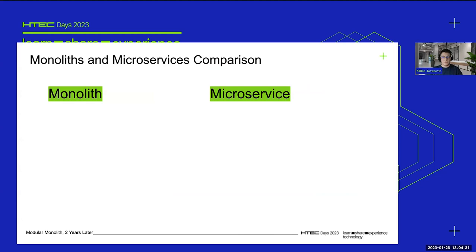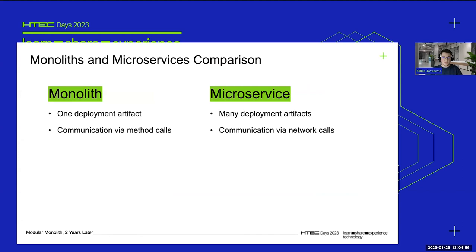Let me give a high-level comparison of monolith and microservices architectures. First, the number of deployment artifacts: for monolith we have just one, because we have one system. On the microservices side we have many deployment artifacts — as many as the services we need to deploy — so deployment is more challenging. When it comes to communication inside the monolith, you communicate using simple method calls that are in-memory and very fast.